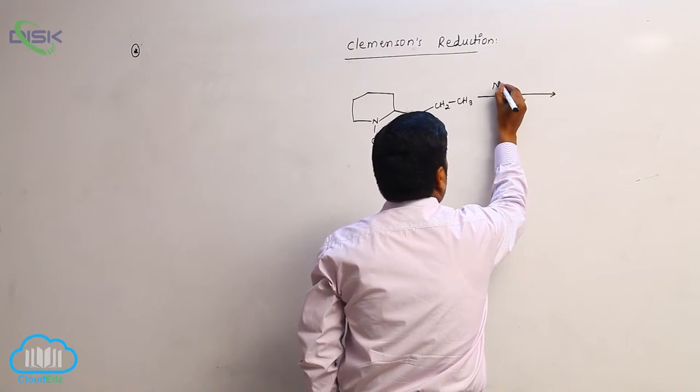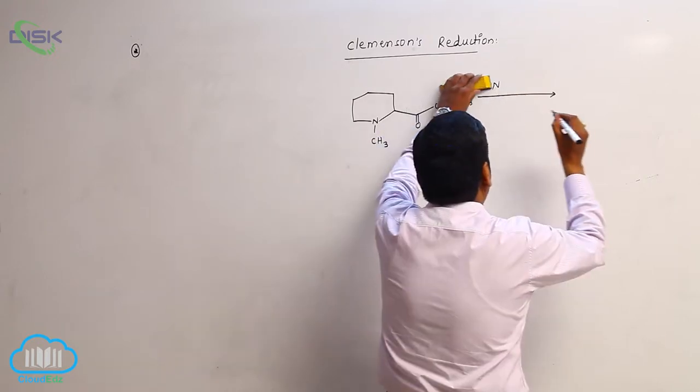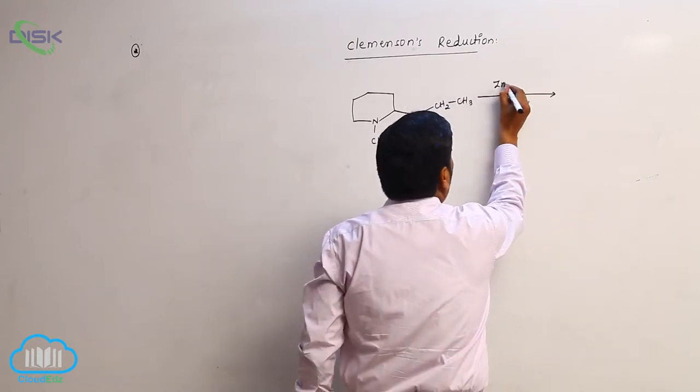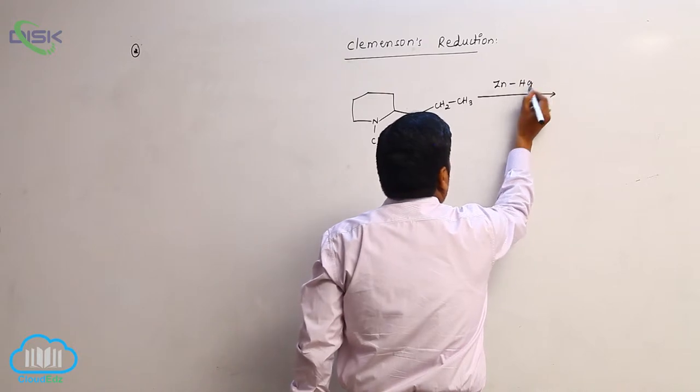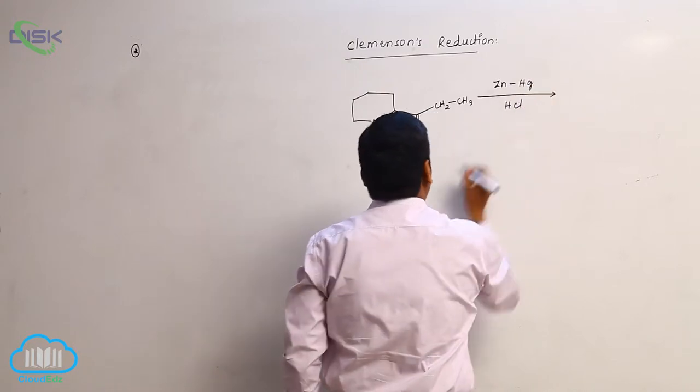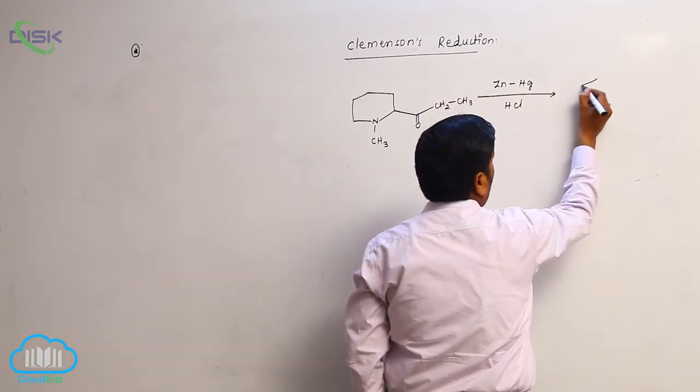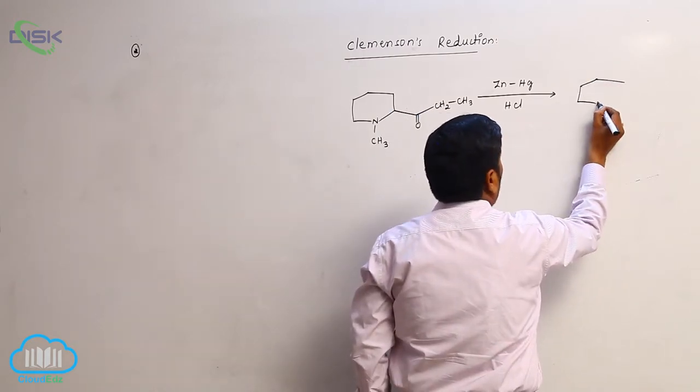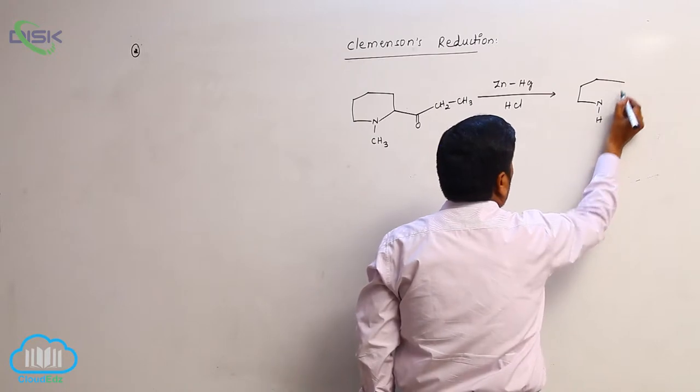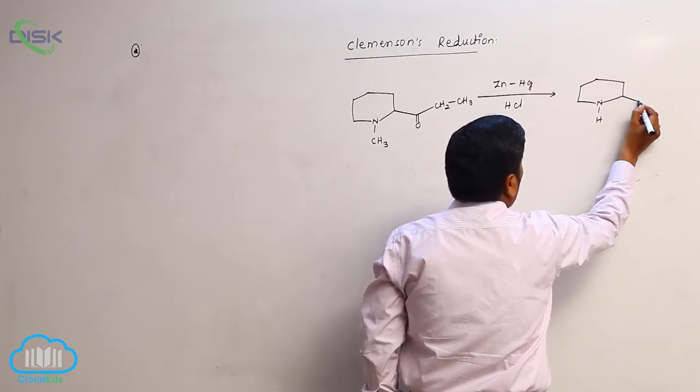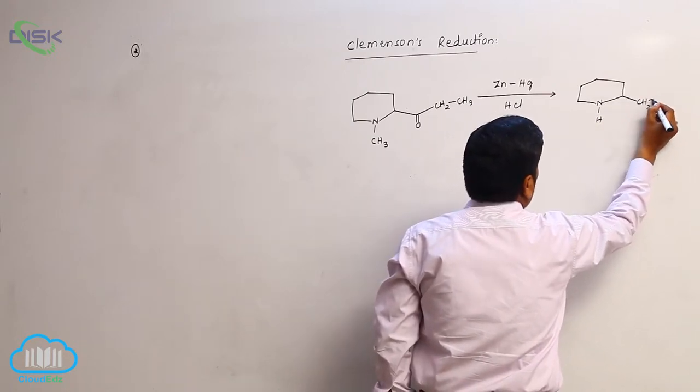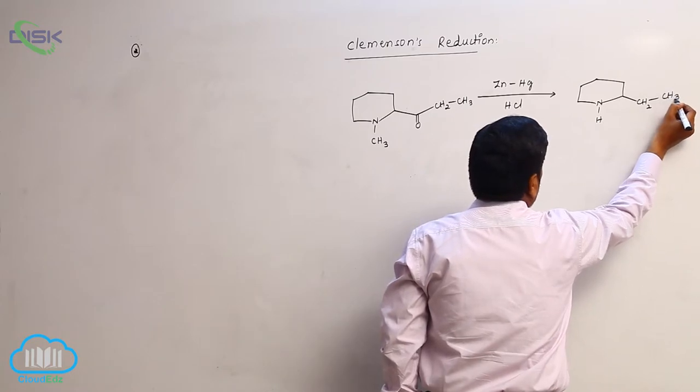While using sodium zinc amalgam in presence of hydrochloric acid, loss of CO takes place. Now N, here is hydrogen, CH2, then here is CH3.